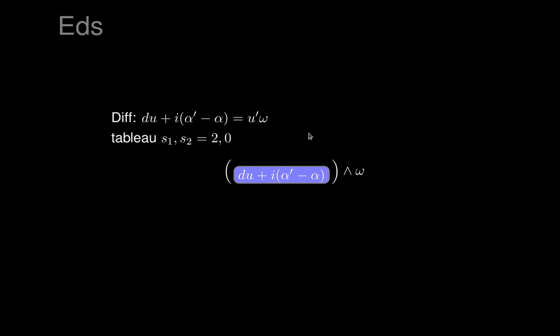So that's the Cartan-Kähler theorem done. Now we have to look for the characteristic variety, and the characteristic variety turns out to be empty — there are no real characteristics of this system. Therefore, every possible choice of integral curve is non-characteristic and so lies in an integral surface. So all we have to do is figure out geometrically what those integral curves are, and then we'll know that they lie on integral surfaces.